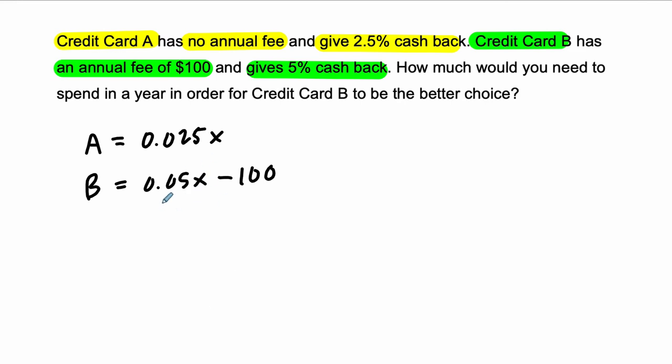We want to find when B is better than A. So the way I'm going to do this is, well, at some point, there's some amount of money I could spend that makes both credit cards equally profitable. So I'll make the equations equal to each other.